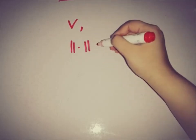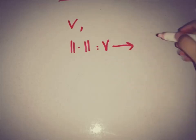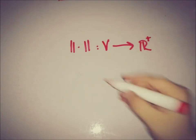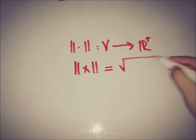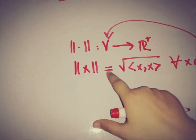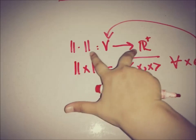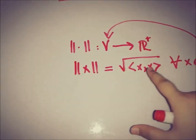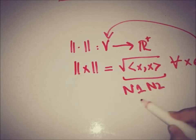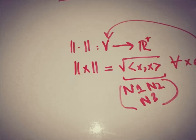The function from V to the non-negative reals given by norm of x equals the square root of ⟨x, x⟩ for all x in V defines a norm in V, because it satisfies all three properties of being a norm. That's all for now. You can subscribe to this channel to watch more upcoming videos. We will meet in the next video — till then, take care, goodbye.